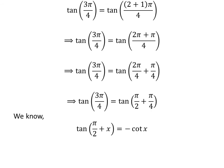We know the famous trigonometry identity: tangent of (half of pi plus x) is equal to minus cotangent of x. The proof of this identity has been explained in the video appearing in the upper right corner, and the link is also given in the description section. Applying this identity gives us tangent of 3π/4 is equal to minus cotangent of π/4.